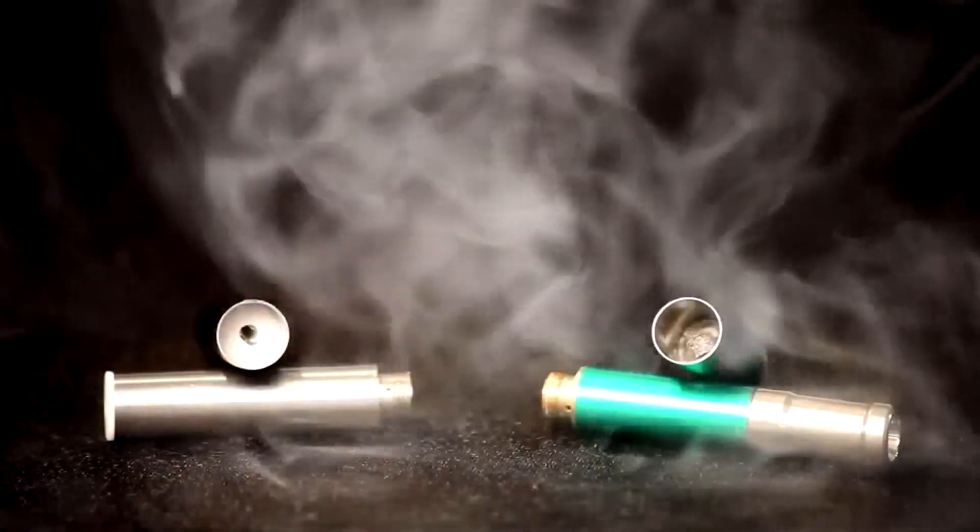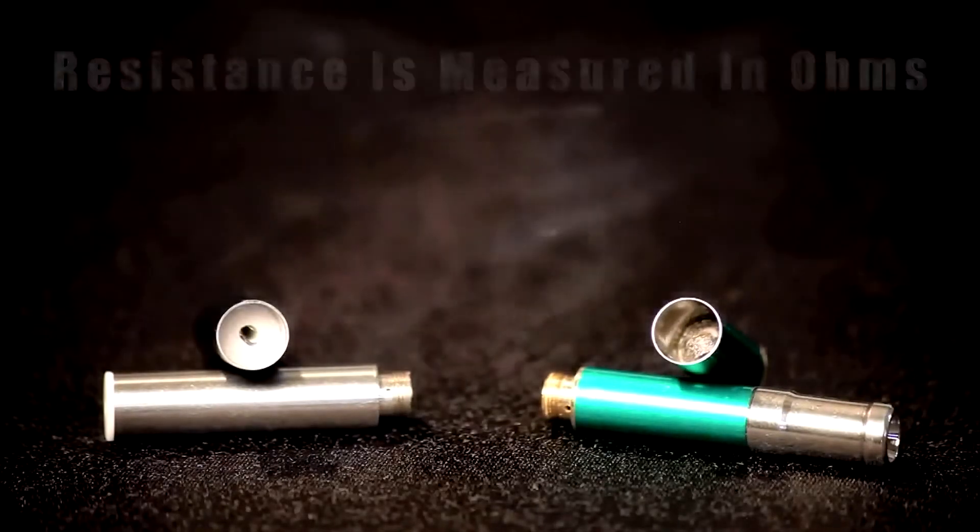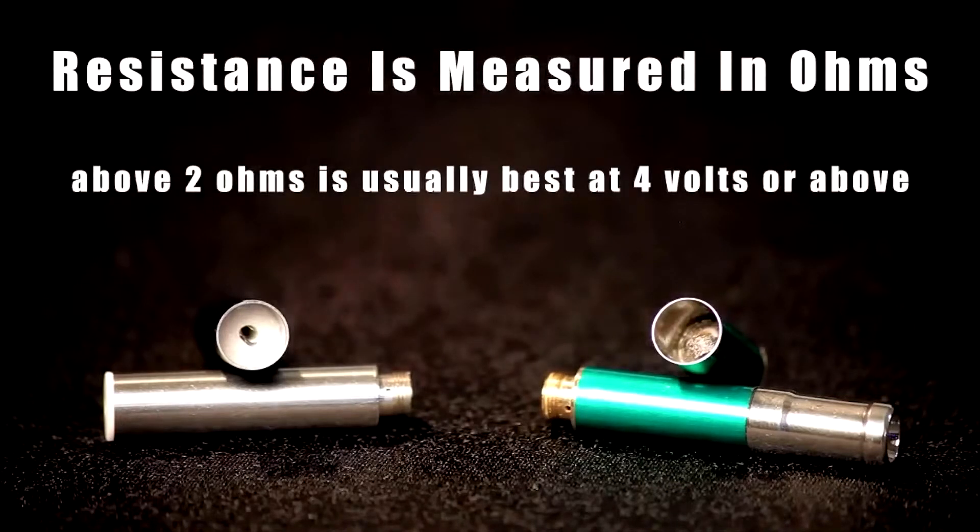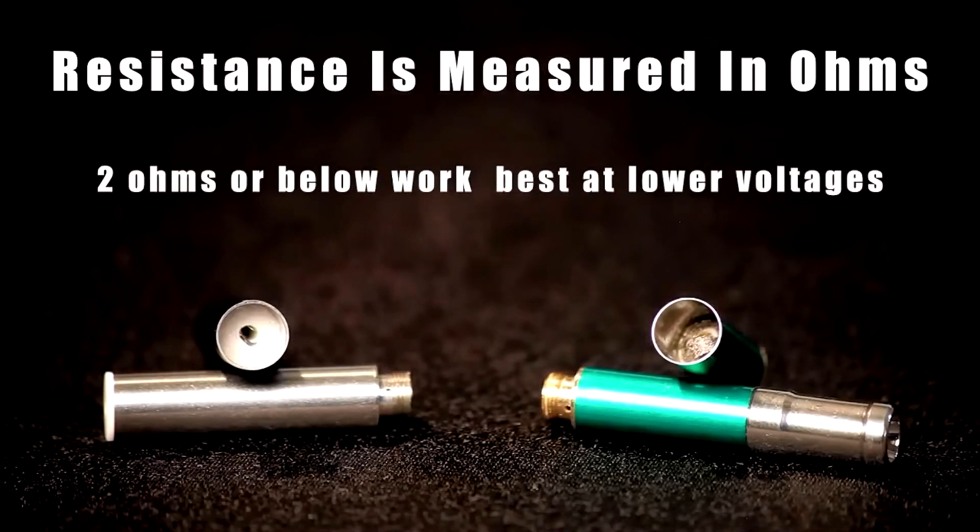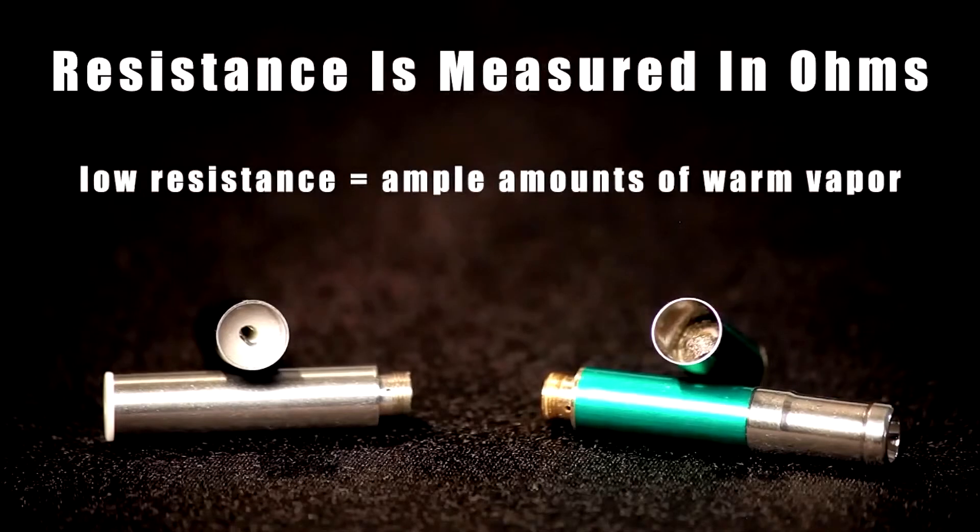Both atomizers and cartomizers can be purchased in various resistances. Resistance is measured in ohms. Atomizers and cartomizers with resistance above two ohms typically work well at medium to high voltages. Atomizers and cartomizers two ohms and below, or low resistance, typically work well at lower voltages and produce a higher volume of vapor that is much warmer.